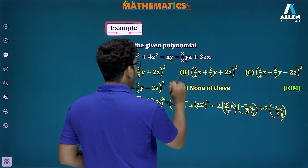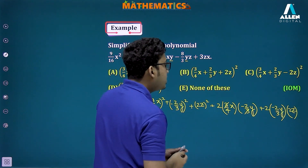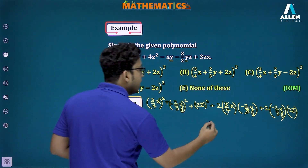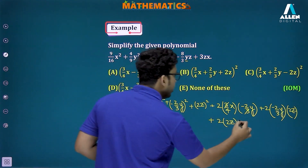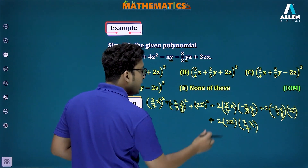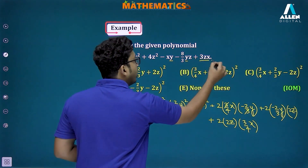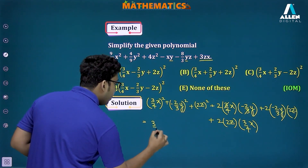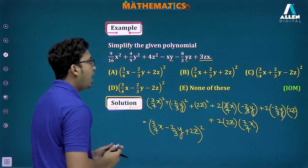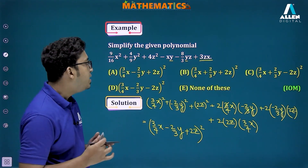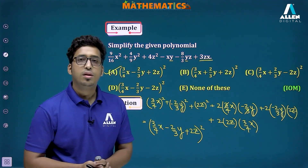Checking 2ca: 2·(2z)·(3/4 x) = 3xz, which also matches. So the expression is the perfect square (3/4 x - 2/3 y + 2z)². Option A is the correct answer — this is how with the help of the trinomial identity we can solve this question quite easily.